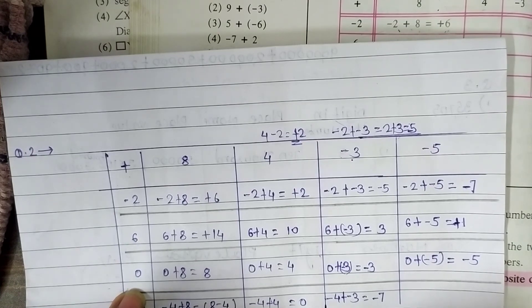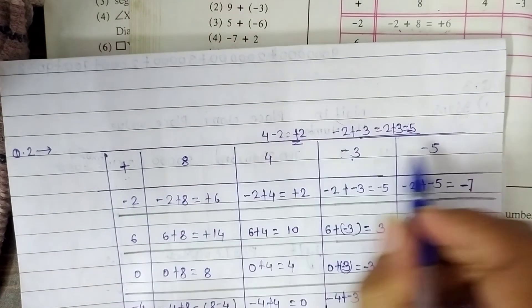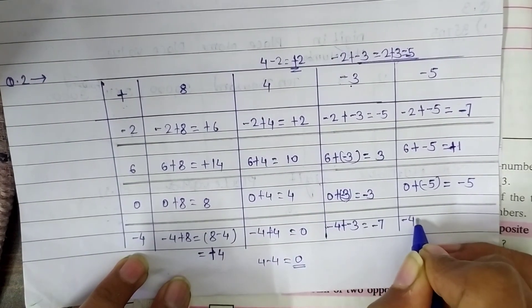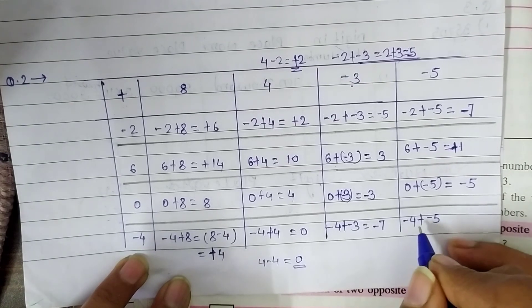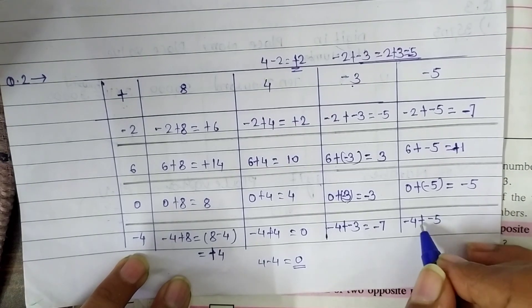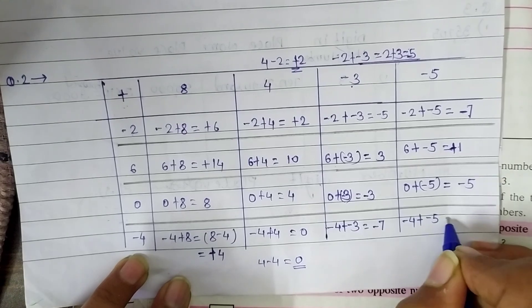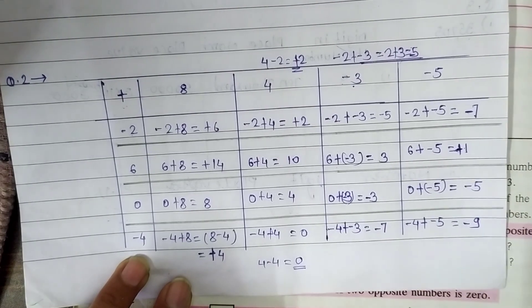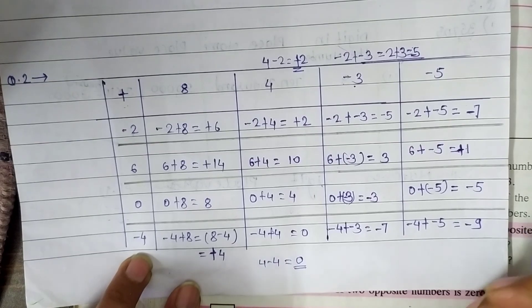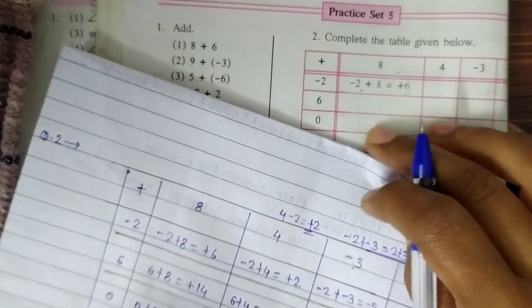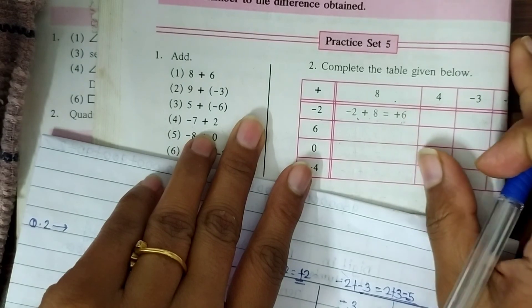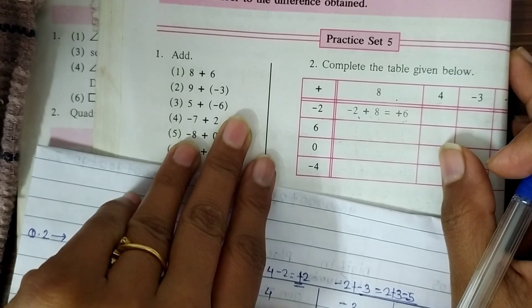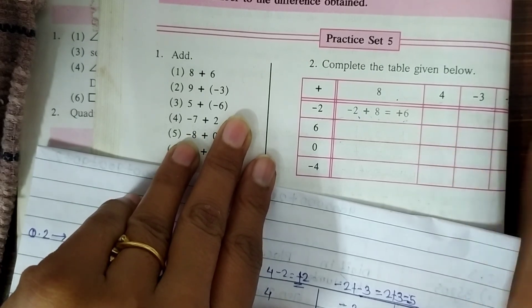Finally, (−4) plus (−5): ignore both integer signs and add them — 4 plus 5 equals 9. Give it the common sign, which is minus, so the answer is −9. This is the solution for our Practice Set 5. I hope you understand it. Practice it very well, and see you in the next video. Thanks for watching — don't forget to subscribe!